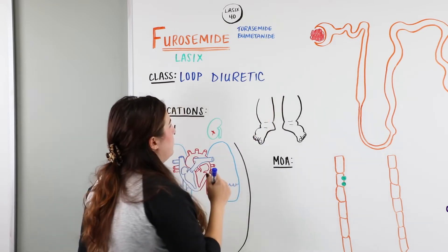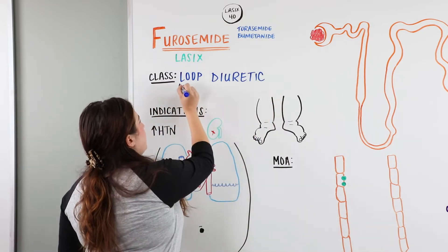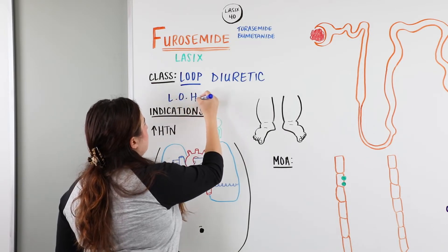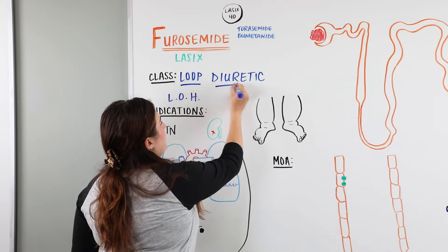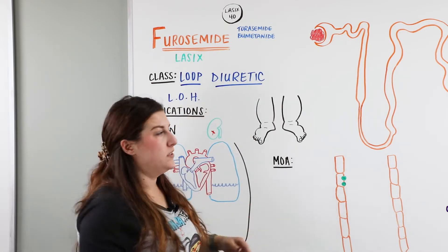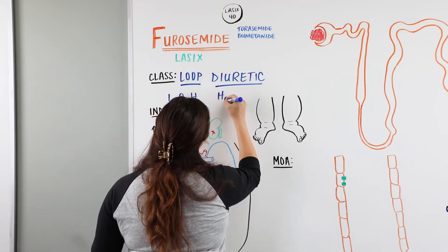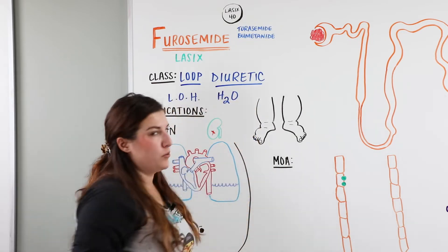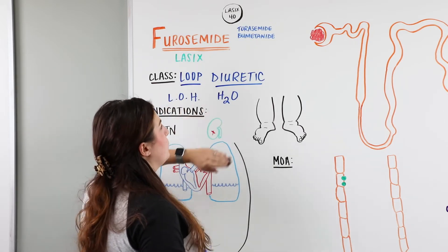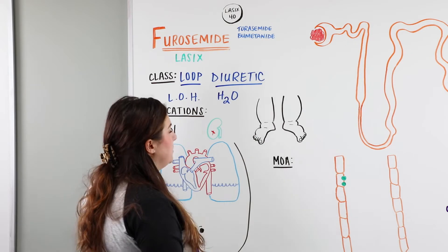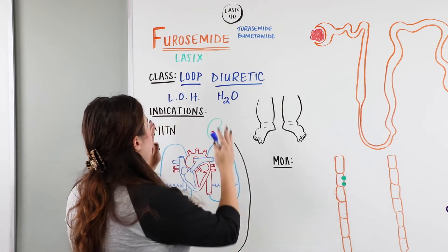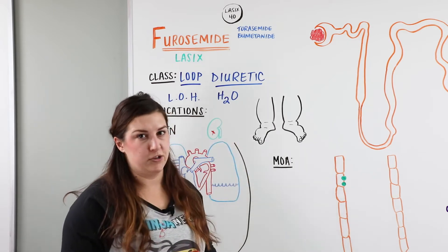What does loop diuretic mean? Loop refers specifically to the loop of Henle, which we'll talk about in a little bit. Diuretic is a word we use in the medical field meaning to diurese or to produce water — specifically urine. This medication is also referred to as Lasix, and when we give Lasix we're essentially trying to draw out fluid from our patient.